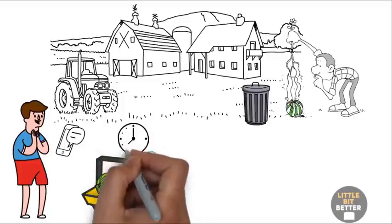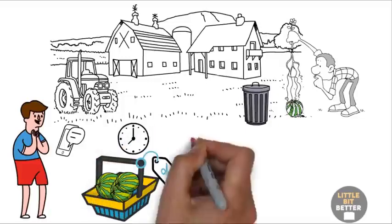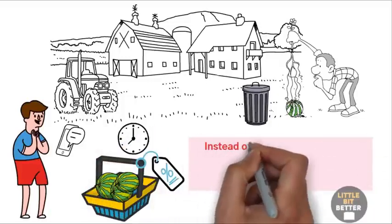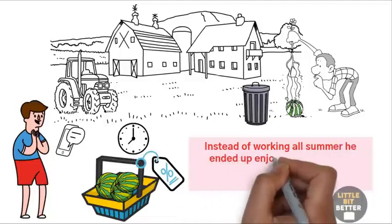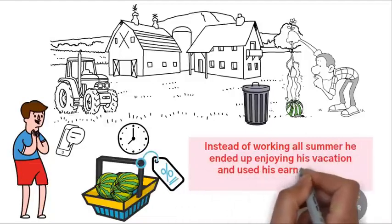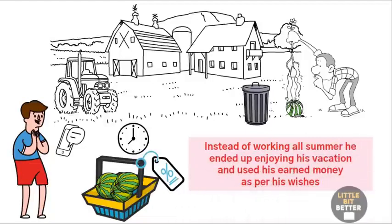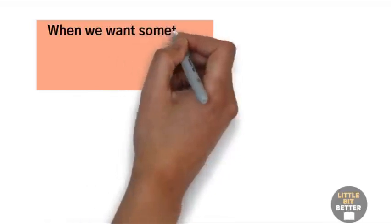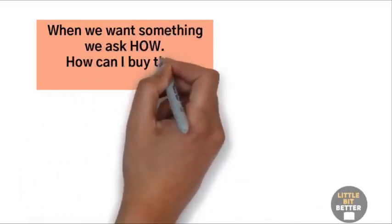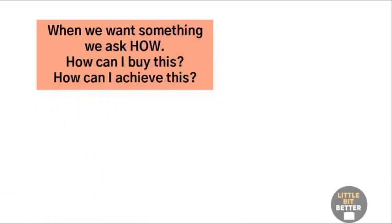Within a few hours, all of his 100 watermelons were sold and he made a profit. Instead of working all summer, he ended up enjoying his vacation and used his earned money, as per his wishes. This is the story of all of our lives. Just like Richie, when we want something, we ask, How? How can I buy this? Or how can I achieve this?